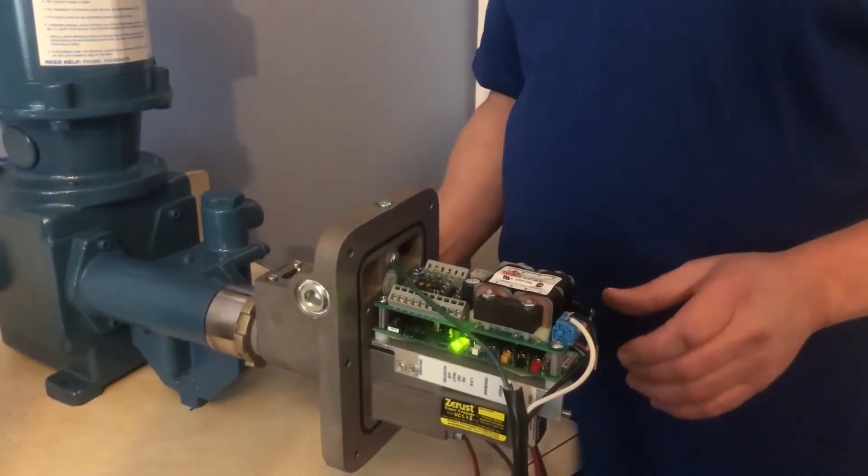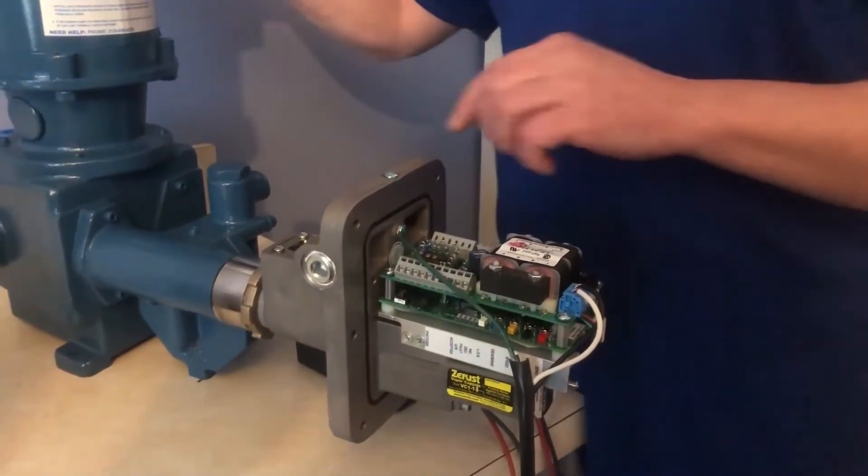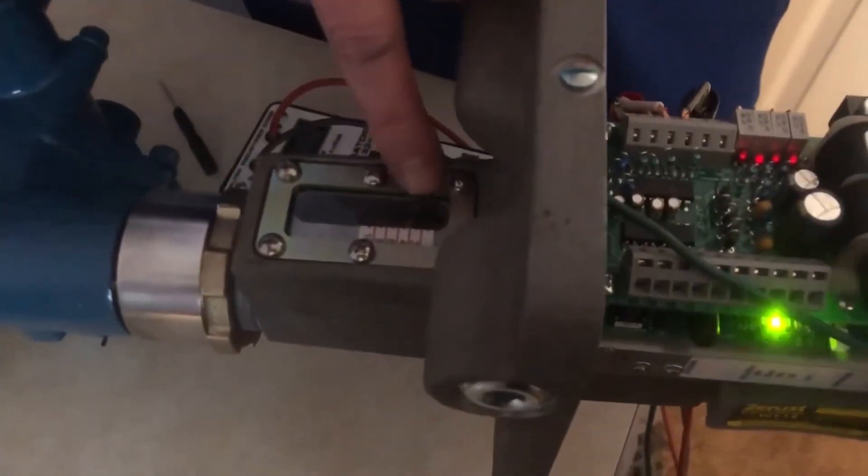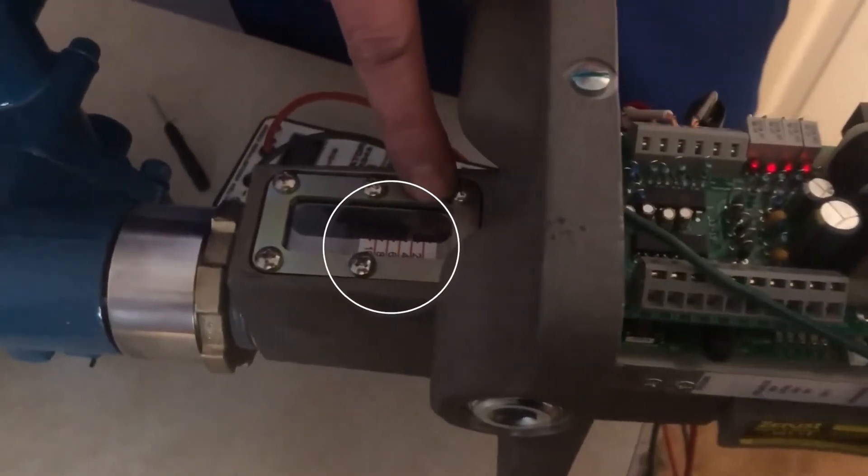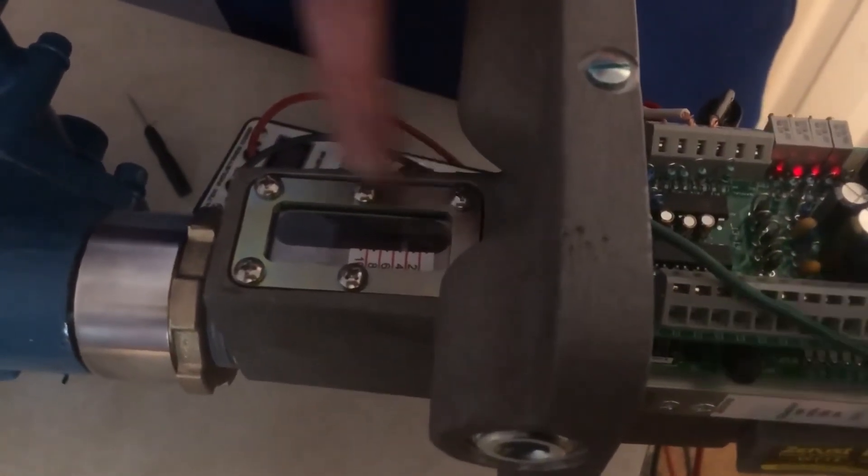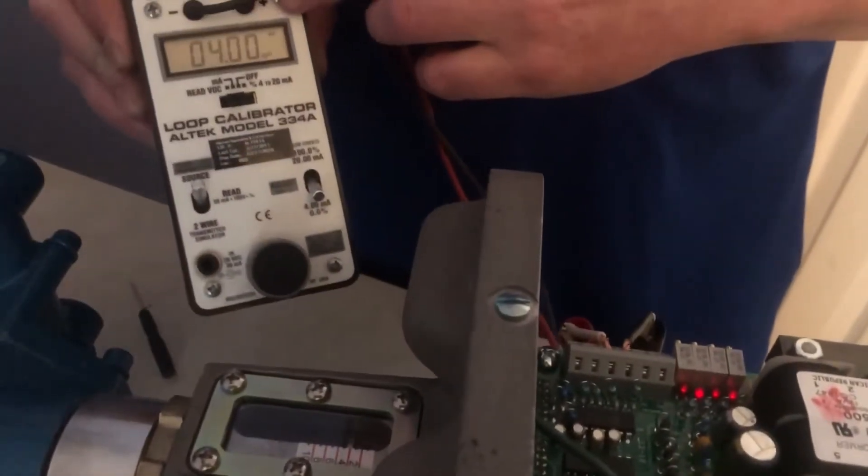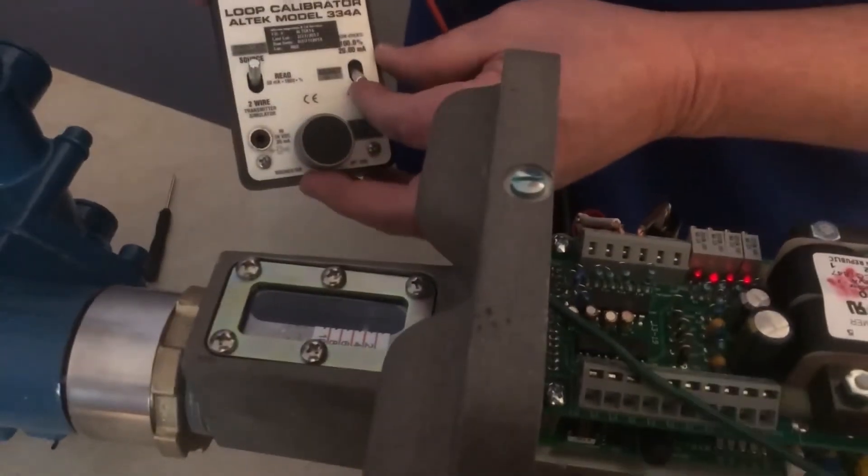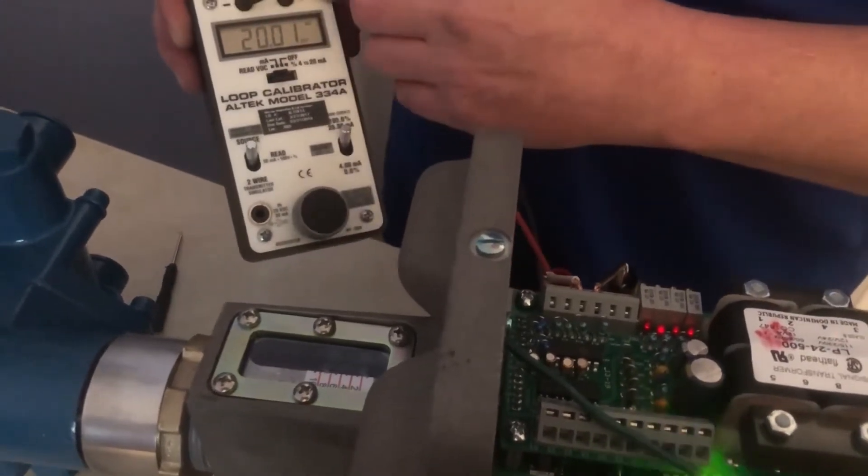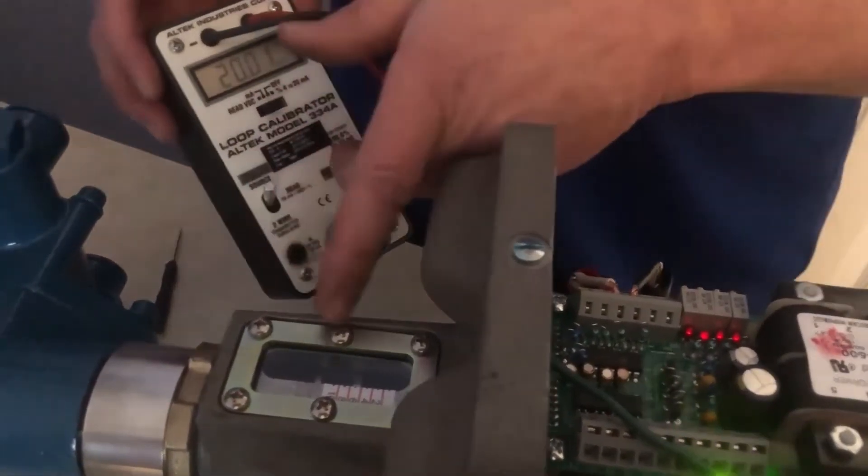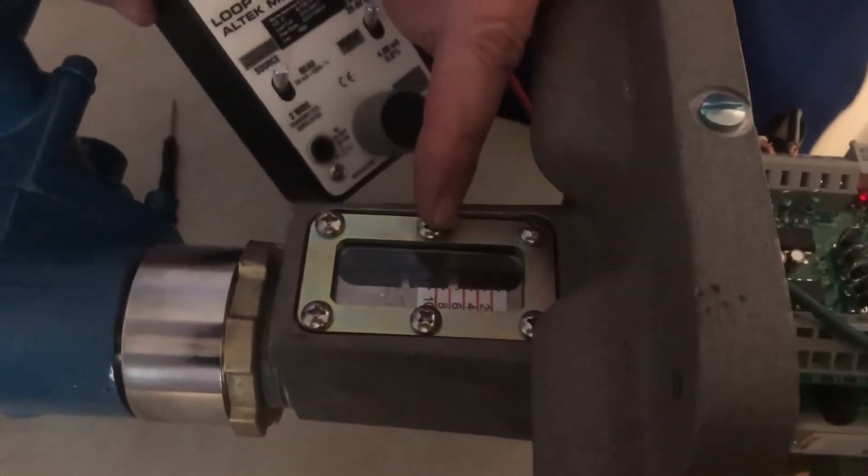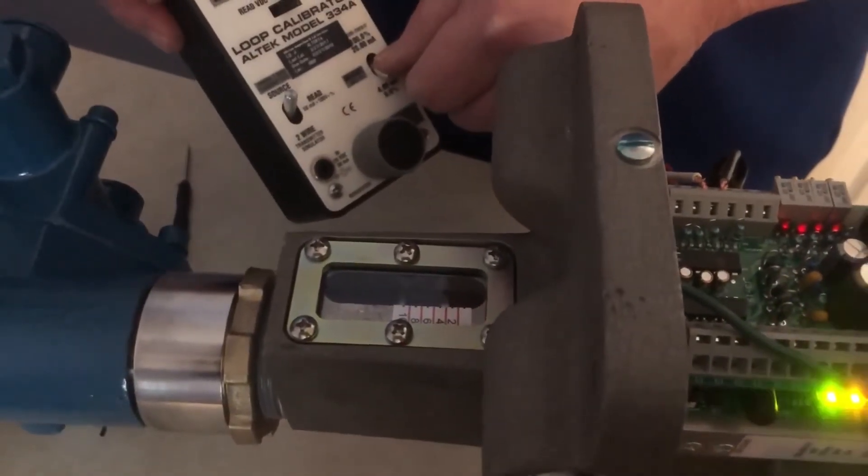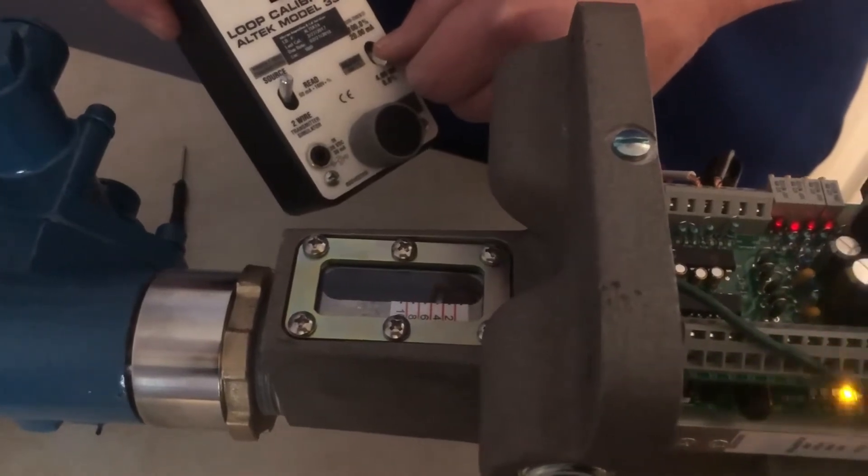Now, four milliamp from the factory is zero stroke on the pump. And if you come over here, you'll see that we have our scale here from zero to 100. And you see that little white spot that indicates zero stroke or the four milliamps that we're simulating into the controller. Now, I will adjust the simulator to 20 milliamps. And you see that the stroke has gone up to 100%. So again, 20 milliamps being 100 and four milliamps being zero stroke.